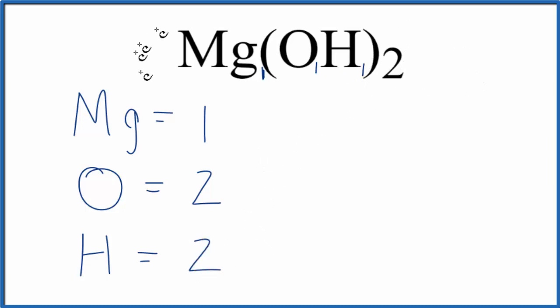If you wanted to know the total number of atoms for magnesium hydroxide, you just add these up. 2 plus 2 plus 1, there are 5 atoms in magnesium hydroxide. Sometimes you're asked to figure out how many oxygen atoms there'll be in one mole of magnesium hydroxide.